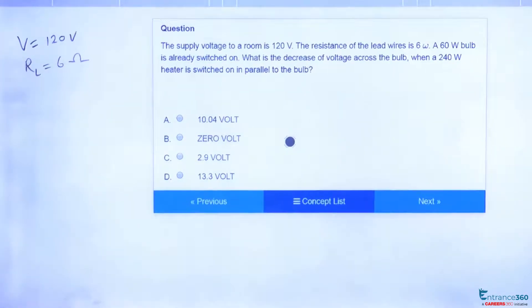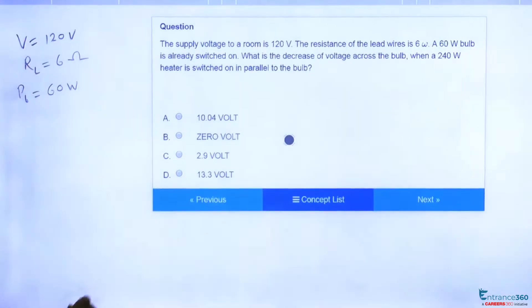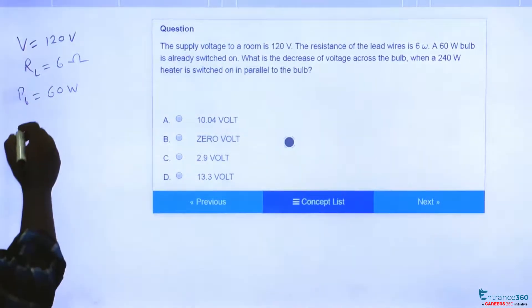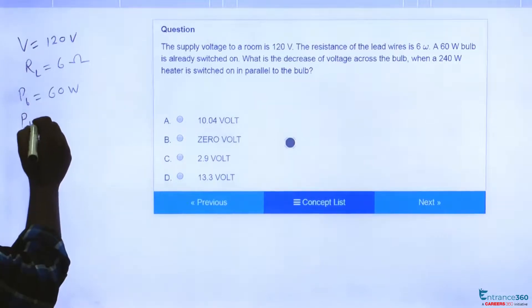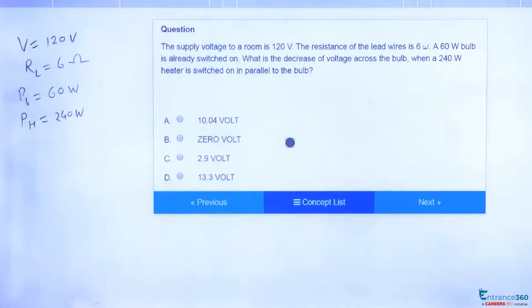Then we have a 60 watt bulb, the power of bulb is 60 watt which is already switched on, and we have a heater which has power 240 watt. So we have two cases: in one case heater is in parallel with the bulb and is switched on, and in another case the heater is switched off. Then we want to find out the decrease in voltage across the bulb. So let's try to solve this question.